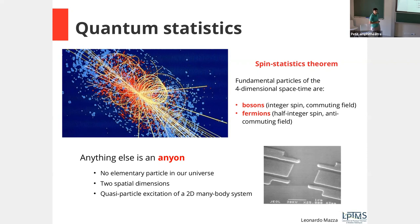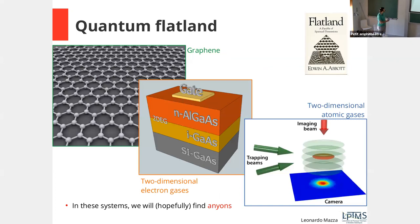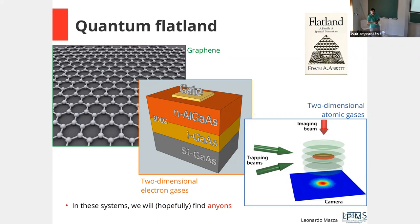The loophole appears if we consider two spatial dimensions — a quantum flatland, a two-dimensional many-body system. There are many real platforms for this: graphene sheets, two-dimensional electron gases which are the basis of most current experiments, and two-dimensional atomic gases. In these systems it is in principle possible to find anyons.